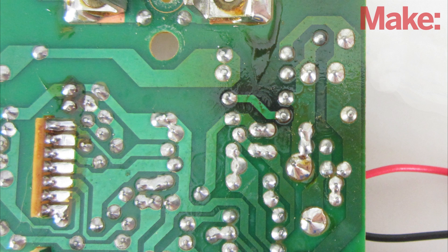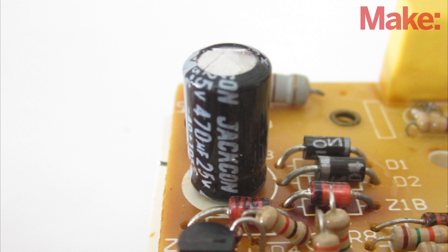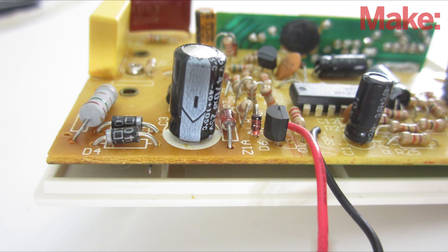We need to identify the positive and negative lines of the power supply. The easiest way to do this is to check the orientation of the capacitor. The side labeled with a negative sign is connected to the negative line of the power supply, and the other side is positive.